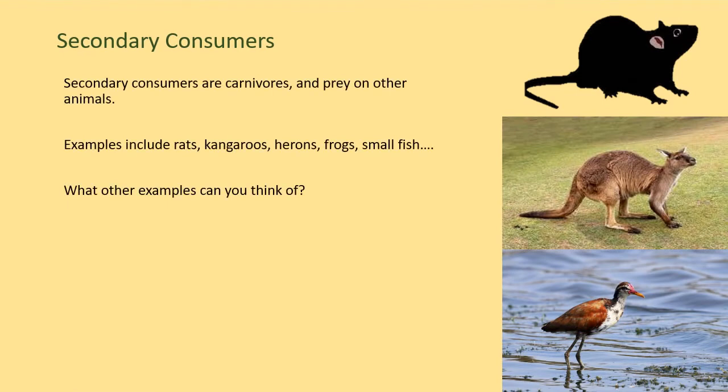Then we have the secondary consumers. Secondary consumers, on the other hand, are carnivores and they prey on other animals. Examples include rats, kangaroos, herons, frogs and small fish. What other examples can you think of?